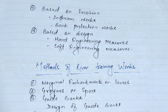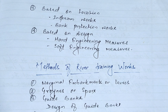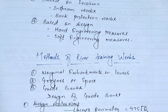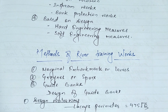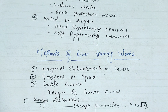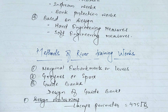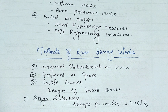Further, we'll talk about the methods of river training works. The methods can be marginal embankments or levees, groynes or spurs, and guide banks. Today we'll discuss the design steps of guide banks. In the first design step, we design the waterway using Lacey's parameter: P equals 4.75 times the square root of Q.